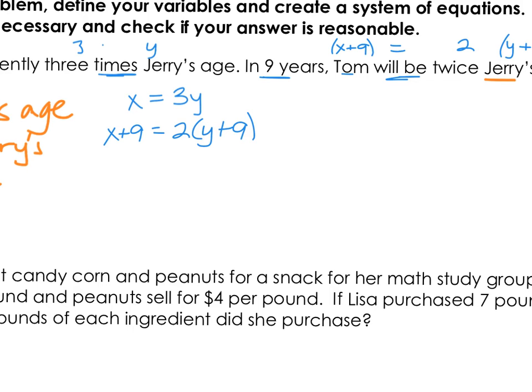We have two separate equations that represent the given information, and now we need to solve. Our solving options are substitution or elimination. What I notice is that x equals 3y, so I could take 3y and substitute it in the second equation. That gives us 3y plus 9. I also recognize on the right we could distribute the 2 in, giving us 2y plus 18. Now if we can figure out what y equals, we can plug that back in to figure out what x equals. If I put my y's on the same side, I'm going to subtract 2y and move the 9 over. 3y minus 2y is just y, and the 9's cancel. On the right, the y's cancel, and 18 minus 9 is 9.